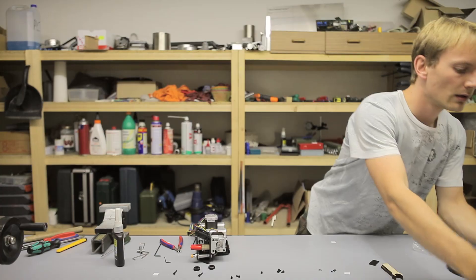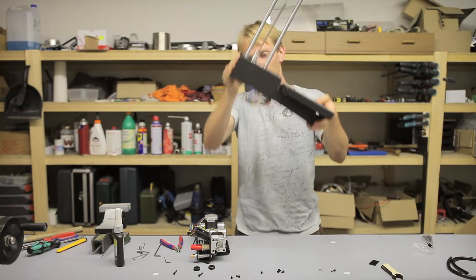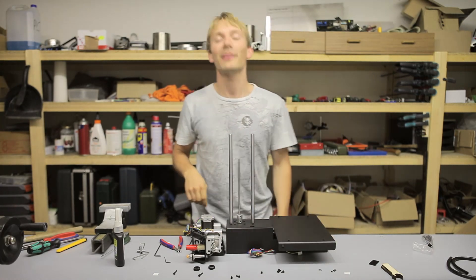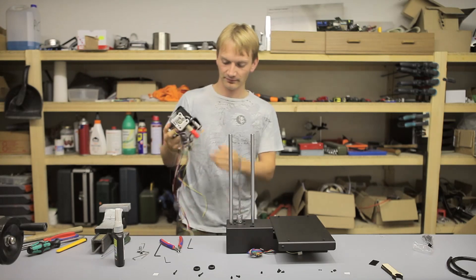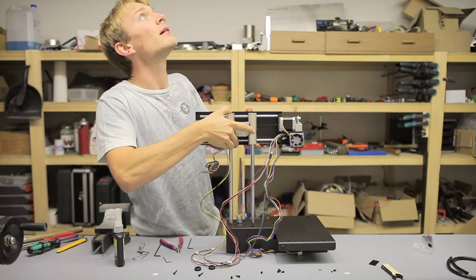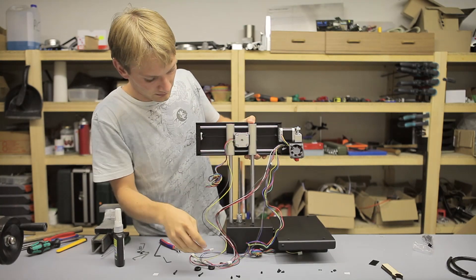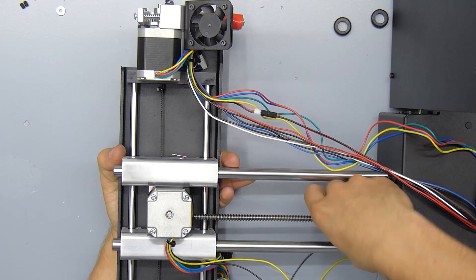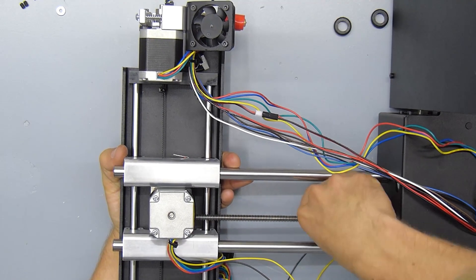When the assembly for this axis is complete, you can install it onto the rest of the printer. To do this, you can simply pop this whole axis on top of the Z-rails and thread the lead screw into the delrin Z-nut. And while it's totally possible to install this upside down, the printer is only going to work if you point the hot end towards the print bed.